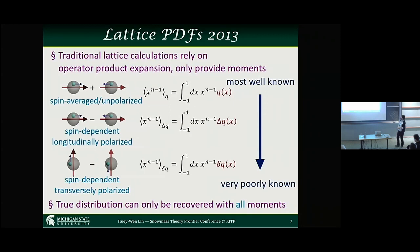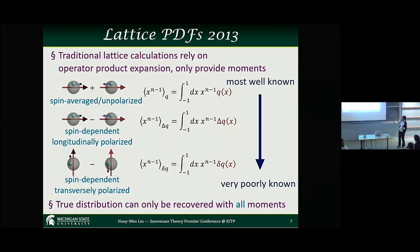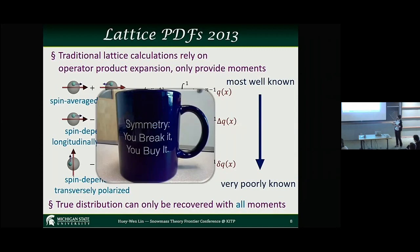Taking a step back, at the last snowmass around 2013, lattice QCD was still in the era when we used something called the traditional method — the operator product expansion — where we take moments. So instead of calculating the full distribution function, whether unpolarized or transversely polarized, we calculate the integral of that. It's okay sometimes, but experiments want to find out about specific x regions, and lattice can only give you the integral. This is okay as long as we can do enough moments and then do a reverse transform to pull out information about the distributions. Unfortunately, due to lattice symmetry, as you go to the second or third moment and beyond, it gets really, really difficult.